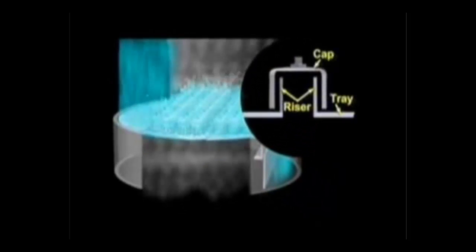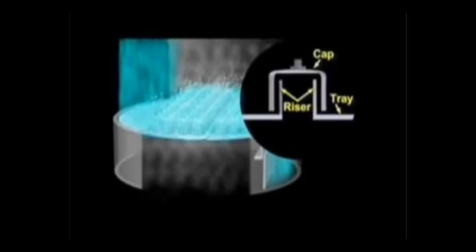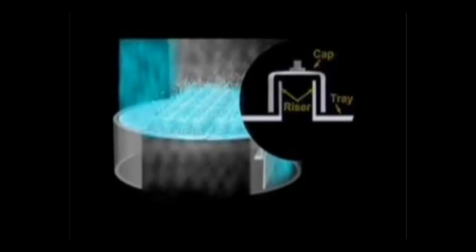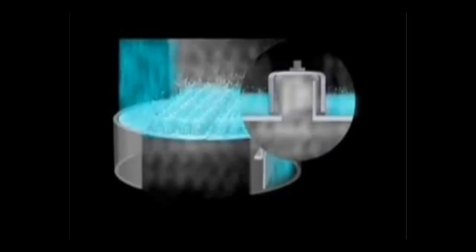The tray consists of a riser with a cap on the top. The vapor flows through the riser and around the cap and contacts the liquid as it flows across the tray.